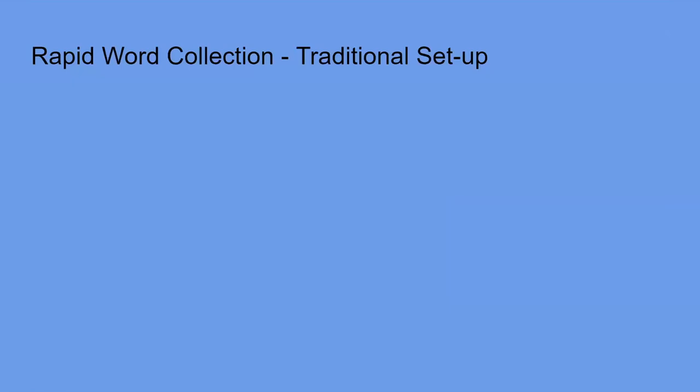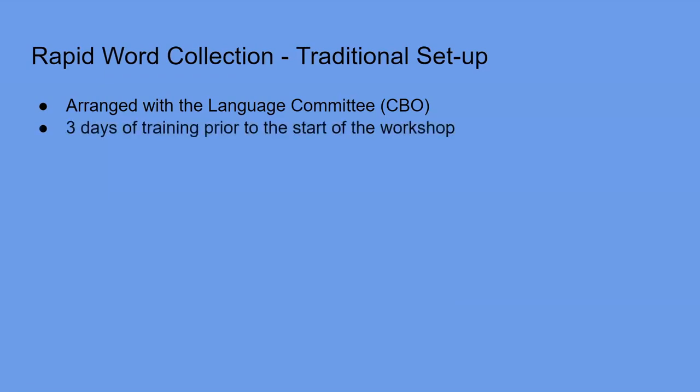For the Rapid Word Collection, the traditional workshop setup involves arranging things with the language committee — the CBO — several months in advance. The language committee has contacts in the language communities and can identify people who would be good participants, and help organize the venue and logistical details. When we start, we do three days of training prior to the actual word collection, specifically for the more involved roles within the workshop so they really understand what they're doing.